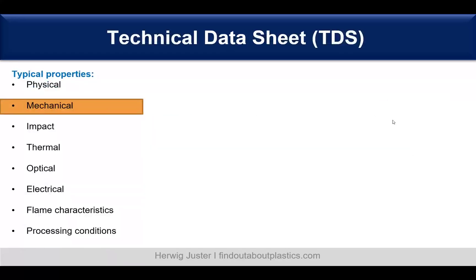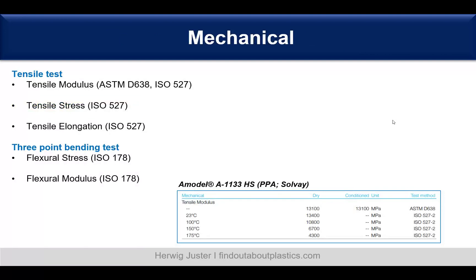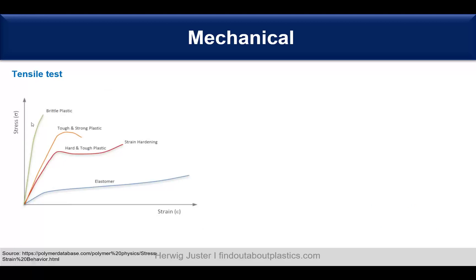Let's continue with the mechanical properties. There are two main tests: the tensile test and the three-point bending test. With the tensile test we can obtain the tensile modulus, tensile stress, and tensile elongation. The three-point bending test gives us flexural stress and flexural modulus. Here is an example from the same material — the tensile modulus is shown at different temperatures, which is already good as it provides several data points. The stress-strain behavior can be quite different depending on whether you have an amorphous polymer, semi-crystalline thermoplast, or elastomer.